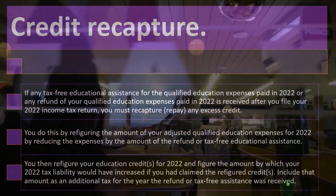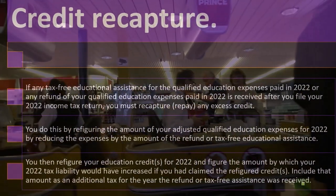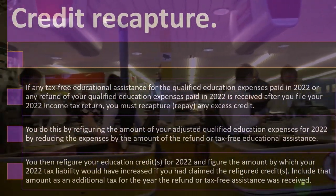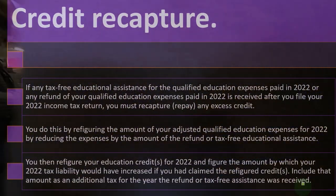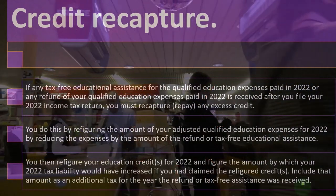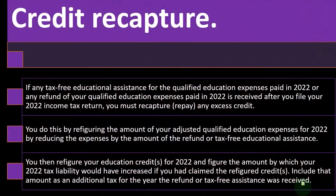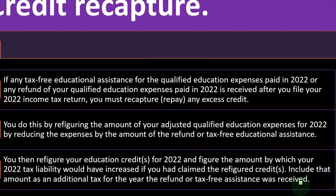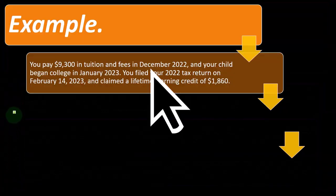Another possible alternative: if you're filing for a lifetime learning credit in 2023 as well, you might think it would be rational to adjust your expenses in 2023 for the refund that you got in 2023. But a lot of times people might not be filing for a lifetime learning credit in 2023 because they didn't go to school in 2023 — when they did in 2022 — and therefore you're left with either amending 2022 or doing this recapture situation.